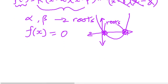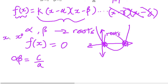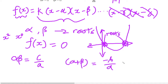The formula states that the product of the two roots, α·β, is equal to c/a, where c is the constant term and a is the x-squared coefficient. And α + β is equal to −b/a. We're just going to go ahead and try to prove that.